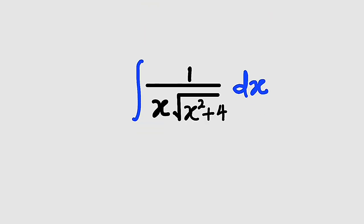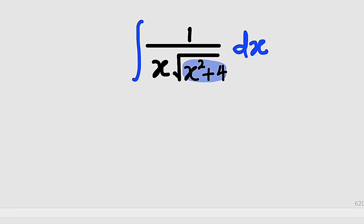So here is our function. We want to integrate 1 divided by x multiplied by the square root of x squared plus 4. This is a famous form — remember, if you have the square root of x squared plus a squared, you can always substitute x with 2 tangent of theta. So we are going to make that substitution here by letting x equal to 2 tangent theta, and wherever we have x, we are going to replace it with 2 tangent theta.